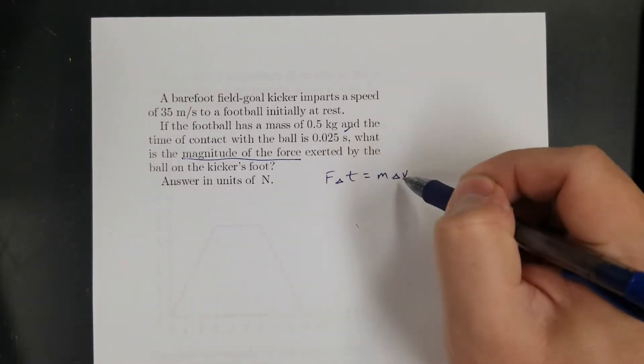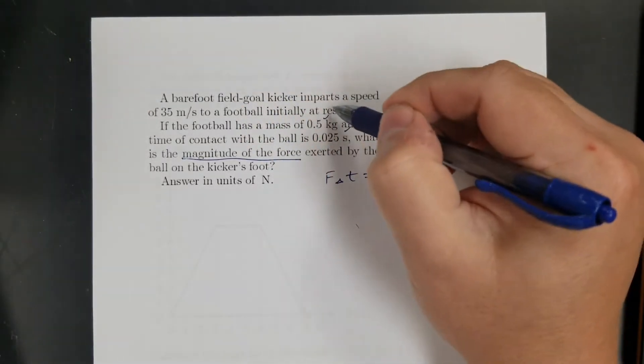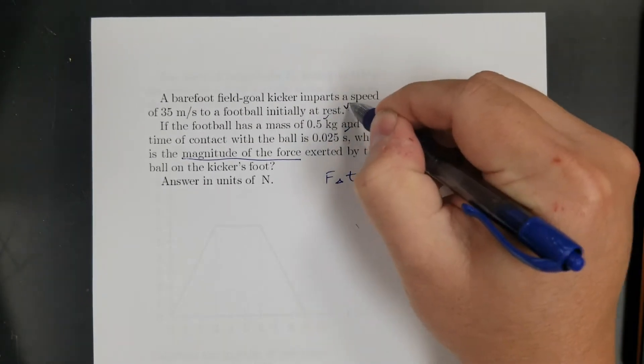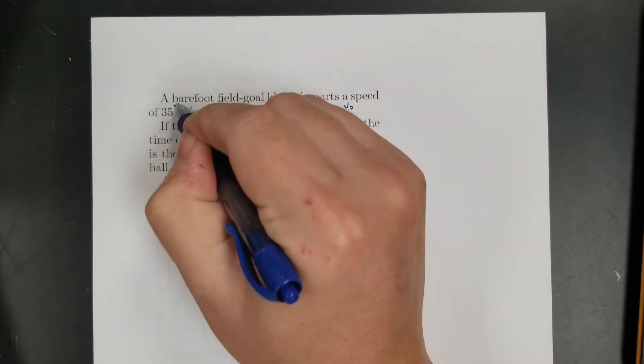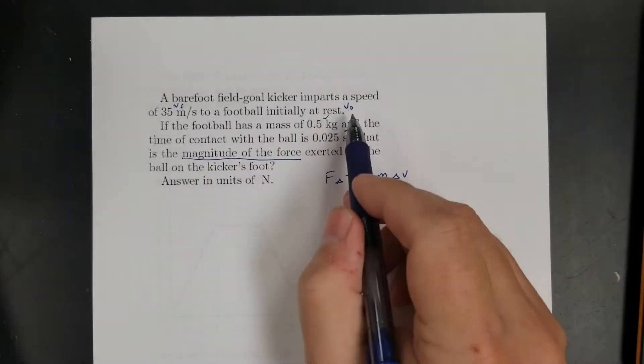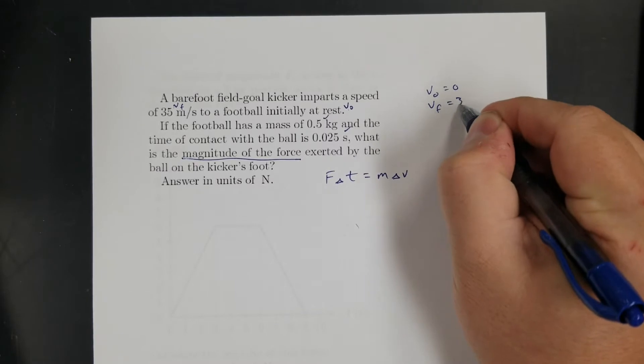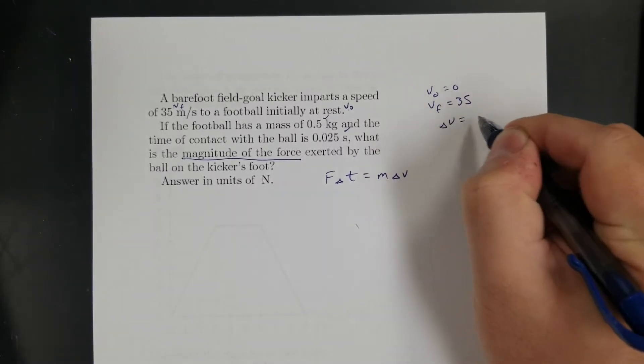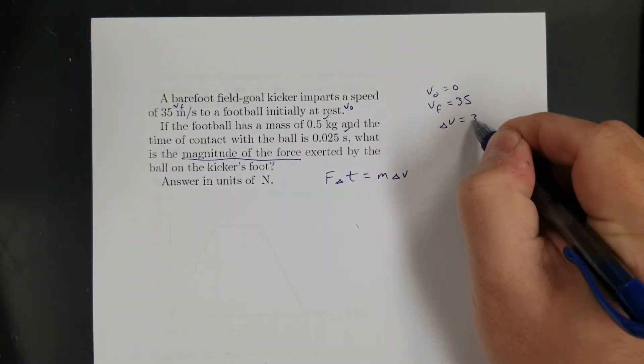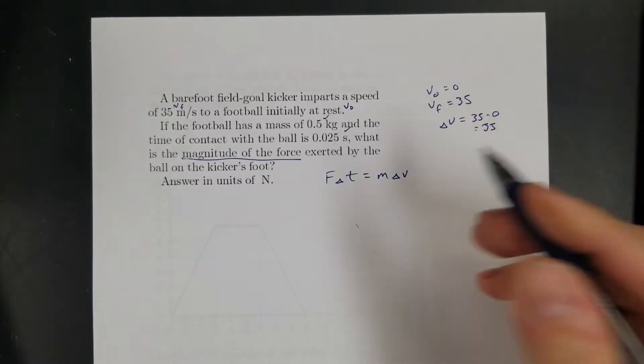So I want F. So do I know the time? Yes. Do I know the mass? Yes. Do I know the change in velocity? Well, it was initially at rest. So that's going to be my initial, and 35 is my final. So that means, yes, I know the change, because it's just 35. Because it started at rest, if v0 was 0, and vf is 35, then my delta v is final minus initial. So 35 minus 0 equals 35. All right, so I got everything.